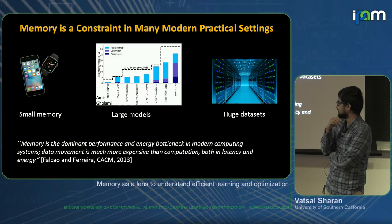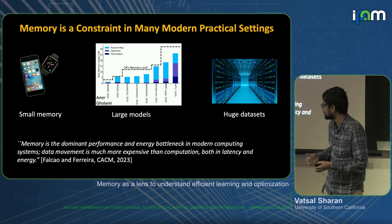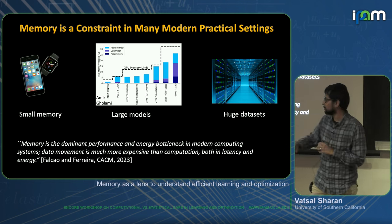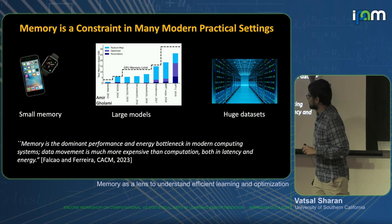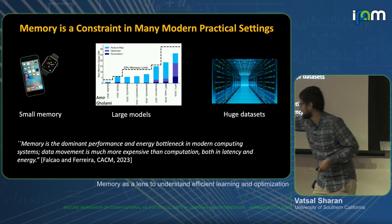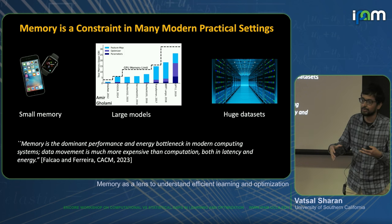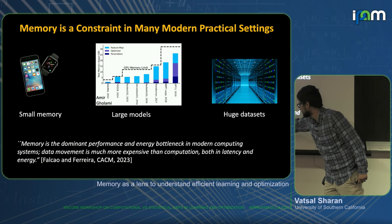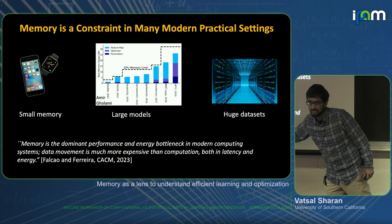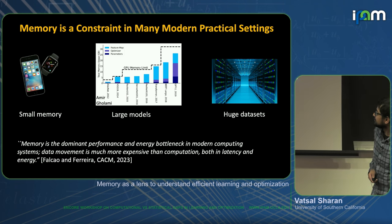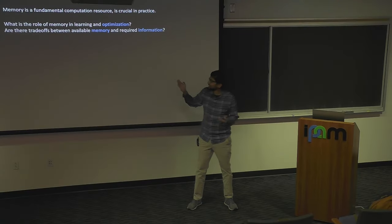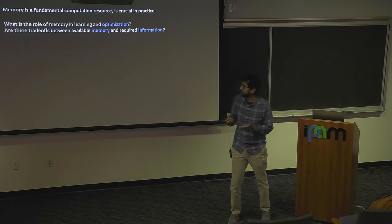There's a nice article in Communications of the ACM from last year which talks about how in modern systems, memory can be the dominant performance and energy bottleneck. Data movement — because of not having enough memory and being forced to move data — can be much more expensive than actually doing computation. This data movement and having limited memory can introduce latency and is often the largest energy cost as well. So memory is increasingly very important in practical settings and can determine efficiency.